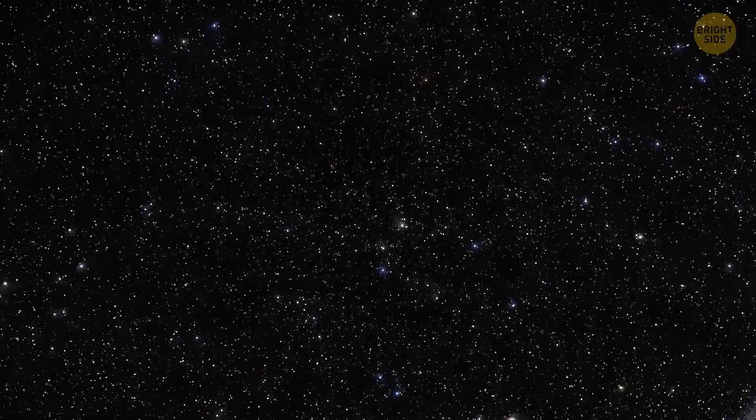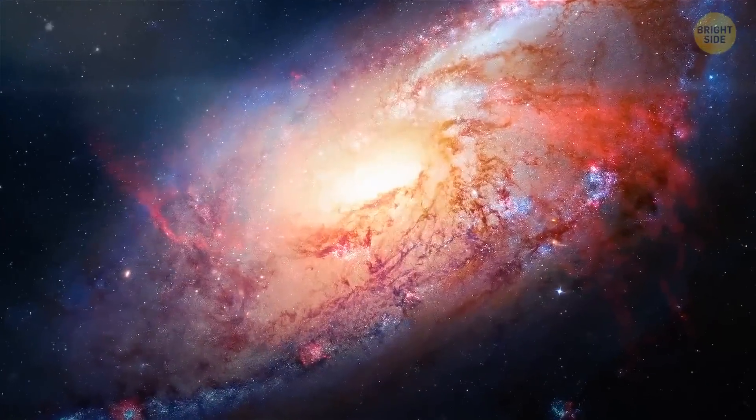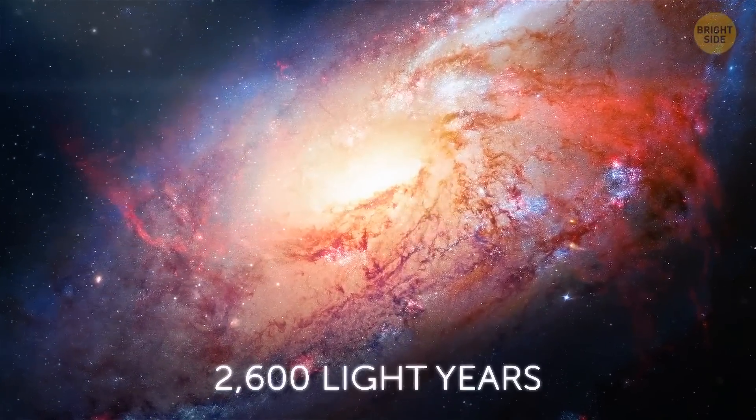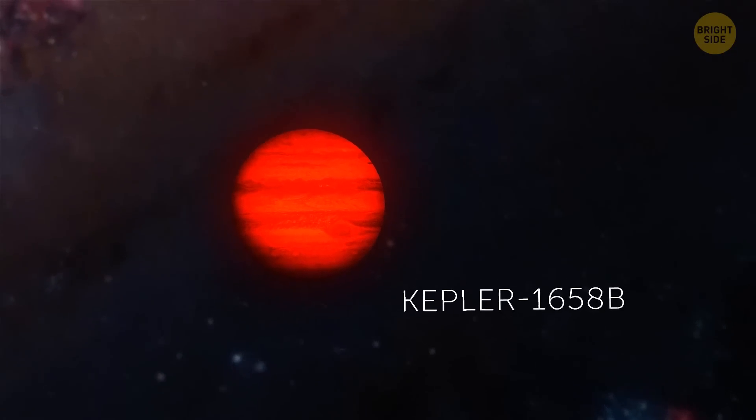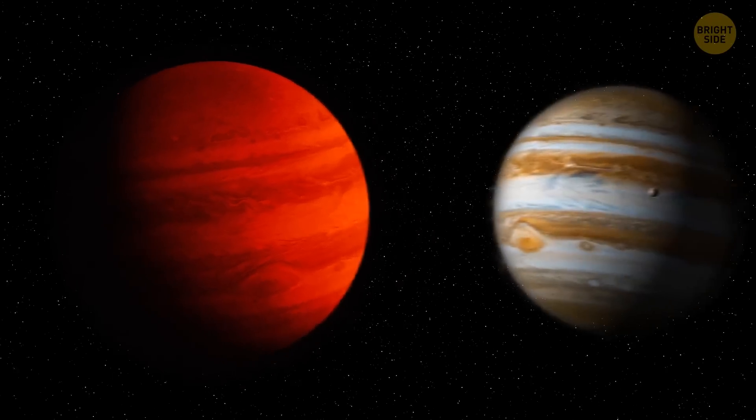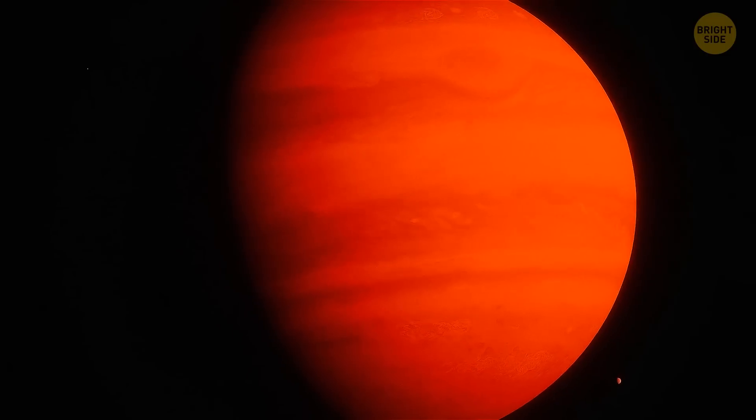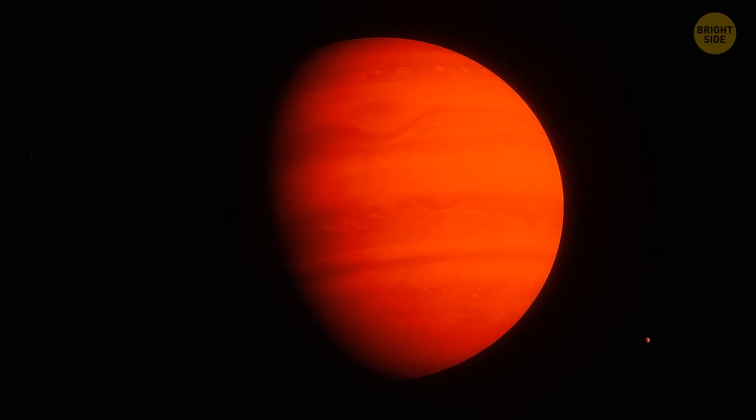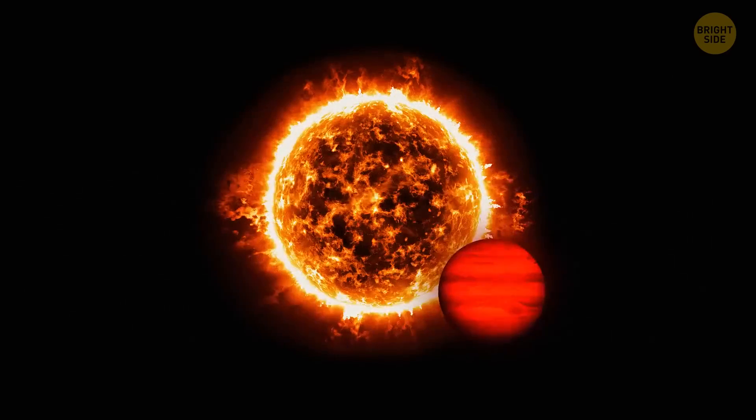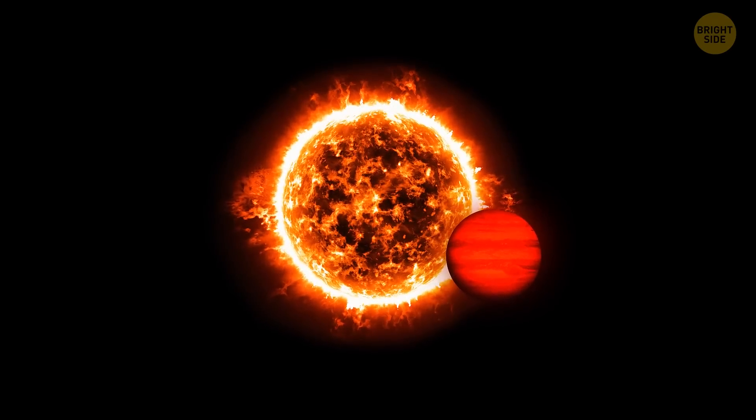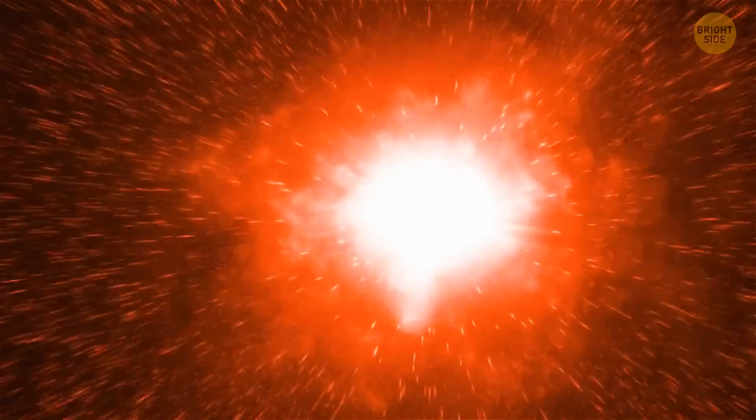In a star system far, far away, to be more precise, 2,600 light-years away, there's an exoplanet called Kepler-1658b. It's a gas giant that resembles our Jupiter. But what differentiates it from Jupiter is that this poor planet is doomed. It's spiraling toward its parent star, which will eventually end in a fiery collision.